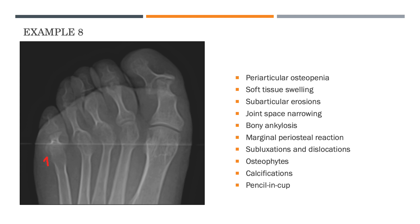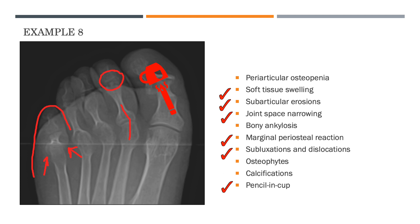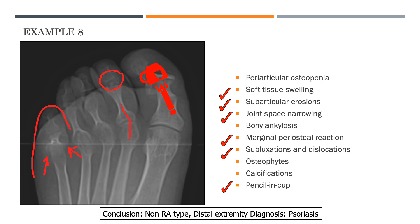In this case, we see a lot of soft tissue swelling, subarticular erosions at the end of the metacarpal, and joint space narrowing approaching end-stage disease. There is a little bit of periosteal reaction forming - seen sometimes in rheumatoid but more commonly in psoriasis. We can also see subluxations with angulation of bone and a classic pencil-and-cup appearance in the proximal phalanx. Putting this all together, this is a fairly classic case of psoriasis.